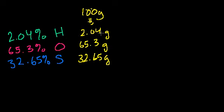Now what we need to do is figure out how many moles of hydrogen is this, how many moles of oxygen, and how many moles of sulfur. Then we can compare the ratios and we should be able to know the empirical formula. So what is the mass of 1 mole of hydrogen?